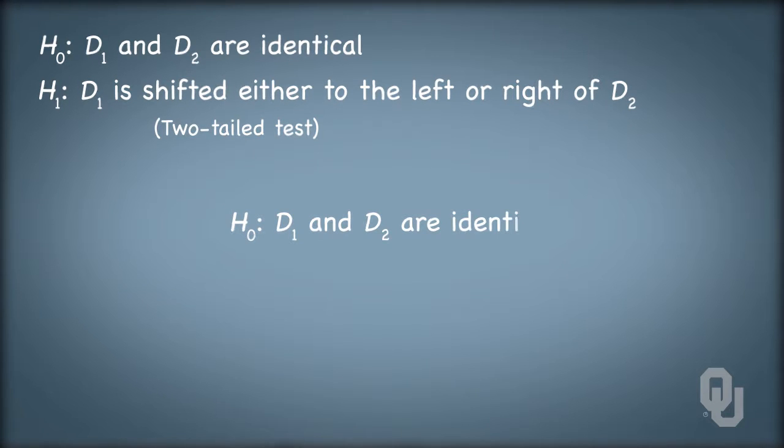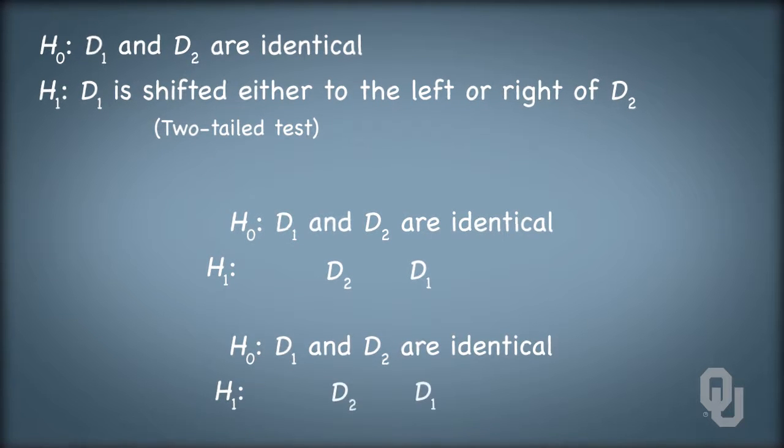Another set of hypotheses could have an alternative hypothesis that d1 is found to the right of d2, suggesting that the central tendency of population one lies to the right of population two. Finally, a third set of hypotheses has an alternative hypothesis that contains d1 shifted to the left of d2. We reject the null hypothesis in each of these situations if the sample evidence tells us that there's a reason to believe that the distributions don't have the same central tendency.